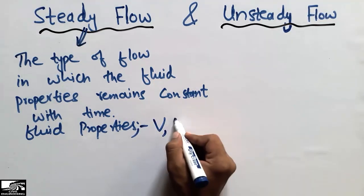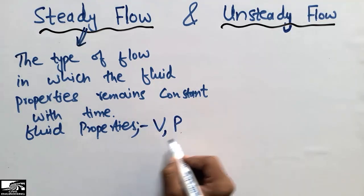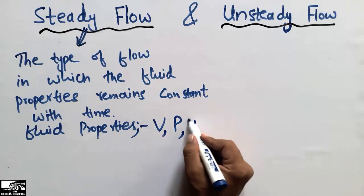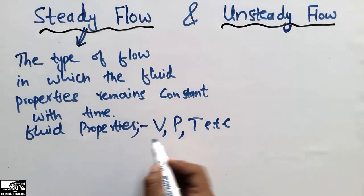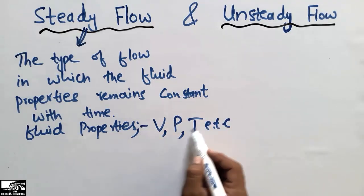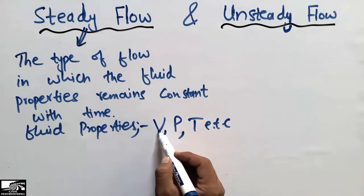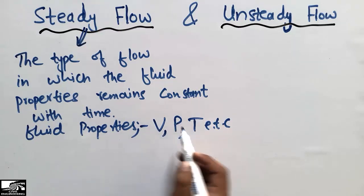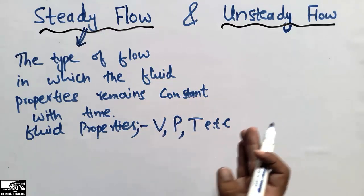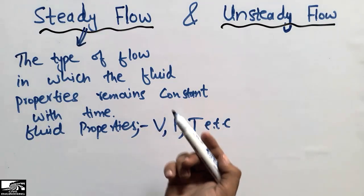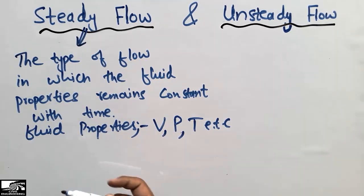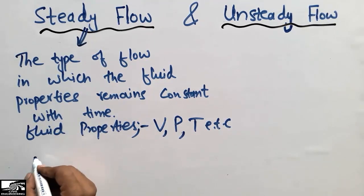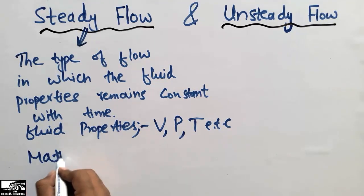The fluid properties include, for example, the velocity of the fluid, the pressure of the fluid, the temperature of the fluid, and many other properties. When all these properties — velocity, pressure, and temperature — do not change with time, we call this type of flow steady flow.